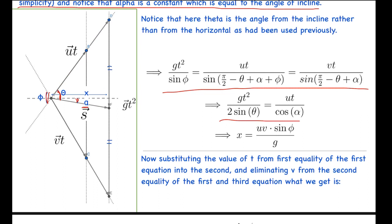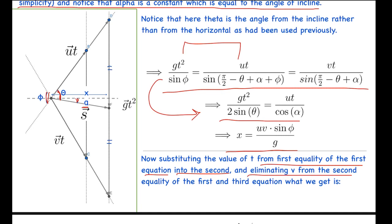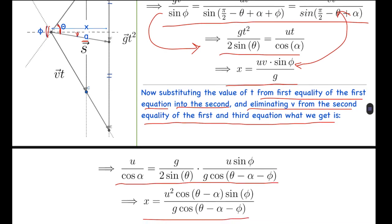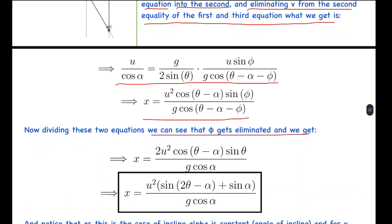By the sine rule for triangle ADE: gt² / sin(φ) = ut / sin(π/2 − θ + α + φ) = vt / sin(π/2 − θ + α). Writing the sine rule for the other triangle (excluding the unknown s side): gt² / (2·sin(θ)) = ut / cos(α). The third equation remains x = uv·sin(φ) / g. Substituting t from the first equation into the second, and eliminating v from the second and third equations, we get two equations which simplify to: x = u²·cos(θ − α)·sin(φ) / (g·cos(θ − α − φ)).